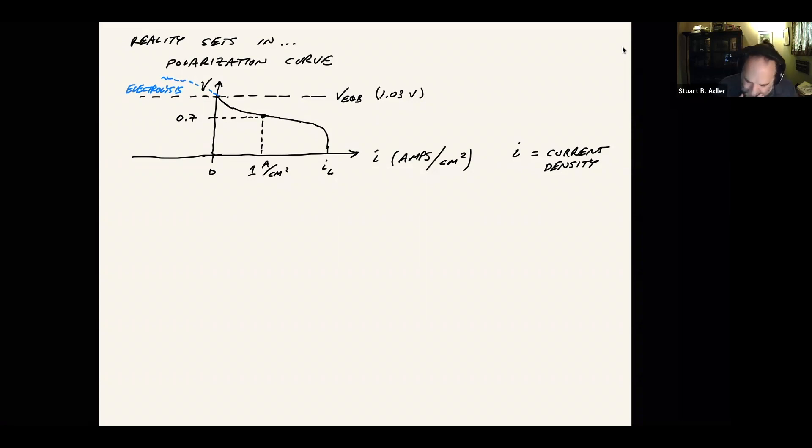So a related thing we can plot is power. So this is often plotted as power density. Power density, this is in watts per square centimeter. This is just taking V cell times the current density and plotting that as a function of current density. I think you can guess what this might kind of look like if we are at zero. If we look at this curve that we drew above it at zero current, we have the maximum voltage, but current times voltage when the current is zero is zero. So we have maximum energy per electron, but we're not passing any electrons. So we don't get any power out of a fuel cell that is operating at zero current.